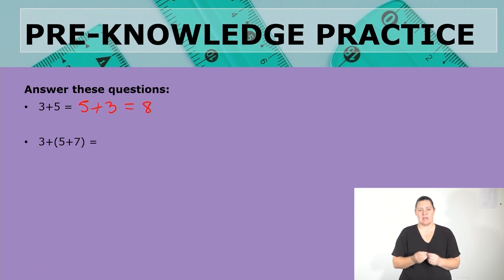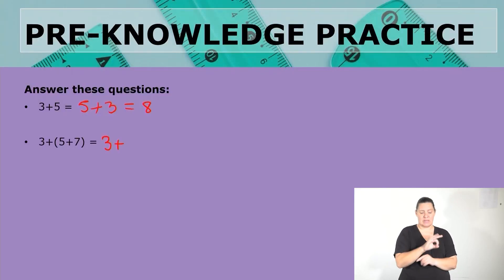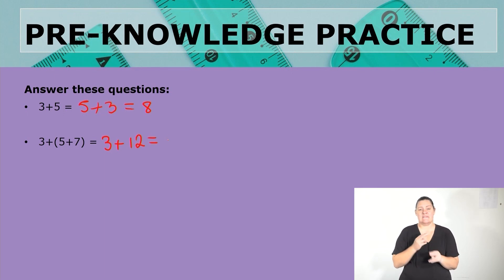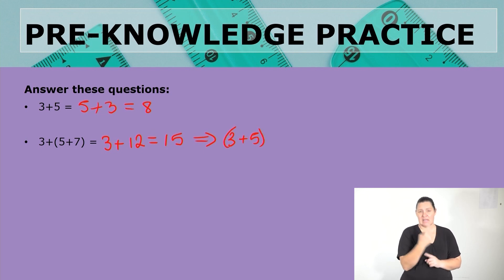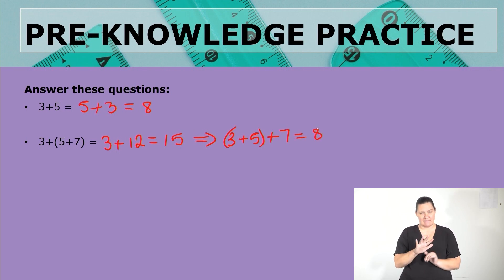Next we have three plus five plus seven, where the five and seven are in brackets to demonstrate the associative property. We can associate five and seven: three plus twelve gives a final answer of fifteen. Alternatively, we can associate the three and the five first — three plus five is eight, then eight plus seven still gives us fifteen. Either way, we get the same answer.